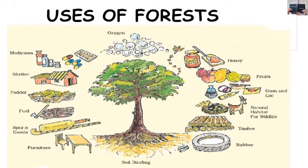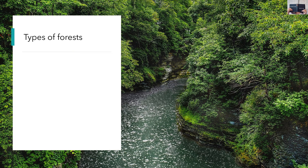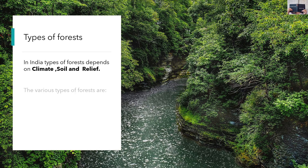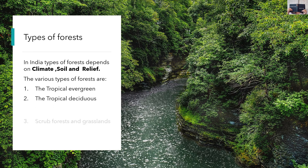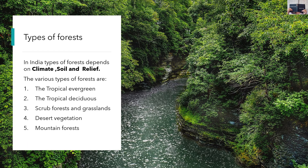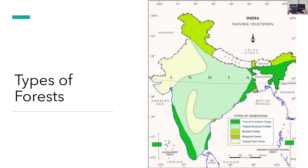Next we'll move on to the types of forests. India has a variety of forest and natural vegetation which varies from region to region due to variations in climatic conditions, soil types, and relief features. Based on these, we have six types of forests found in India: tropical evergreen forest, tropical deciduous forest, scrub forest and grasslands, desert vegetation, mountain forests, and mangrove forest. Here we have a map of India showing the different types of vegetation found in different regions of the country.